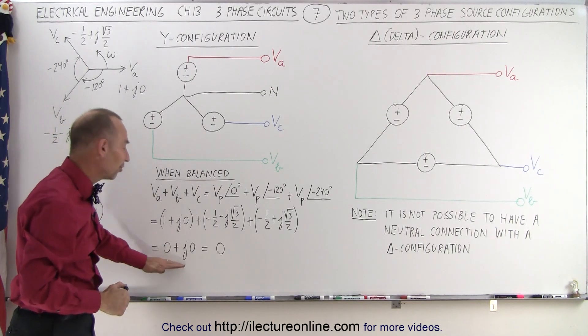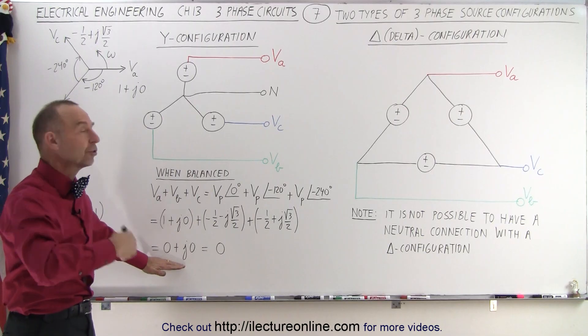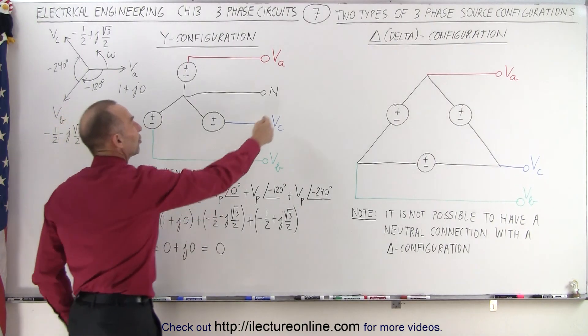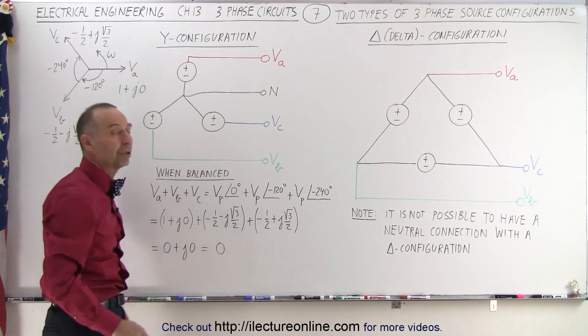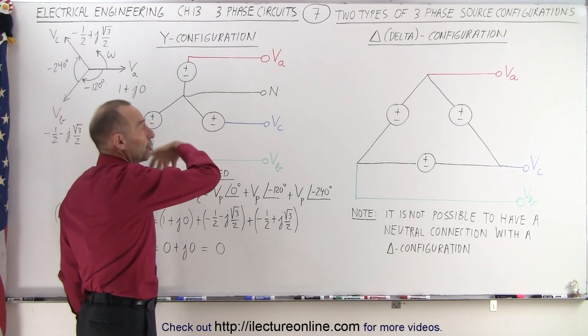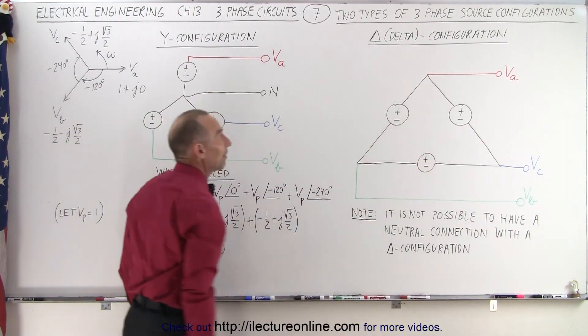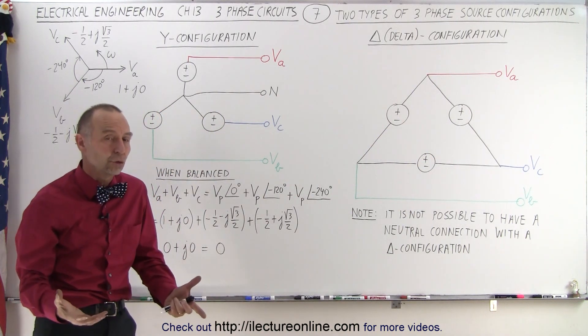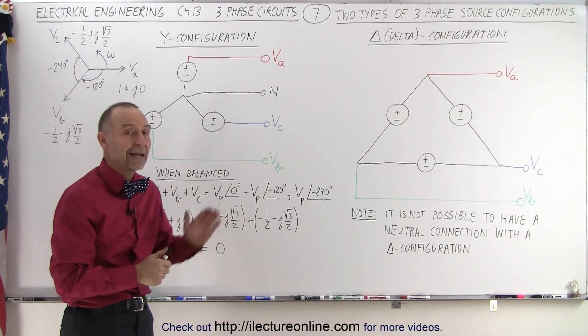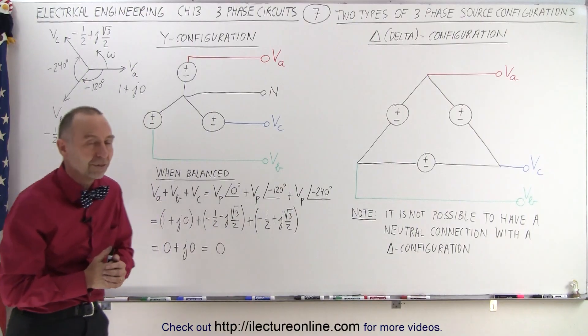But if that's the case, we have zero voltage sum of all three voltages combined, and we should have zero current coming back on the neutral in such a way that the neutral can be removed, and it should not make any difference, and therefore we could have a delta configuration with no neutral connection, and it should be perfectly fine if the system is balanced.